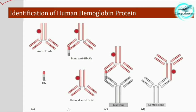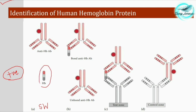This is a very important diagram. In the sample well we put our sample. Suppose the test sample is positive — we want to detect blood and have extracted the sample. If there is blood, it will contain human hemoglobin protein. This hemoglobin protein is mixed with the hemoglobin antibody, the anti-hemoglobin antibody, in the sample well. The hemoglobin antigen or protein will bind to the antigen-binding site of the anti-hemoglobin antibody to form an antigen-antibody complex, and there will also be unbound anti-hemoglobin antibody.